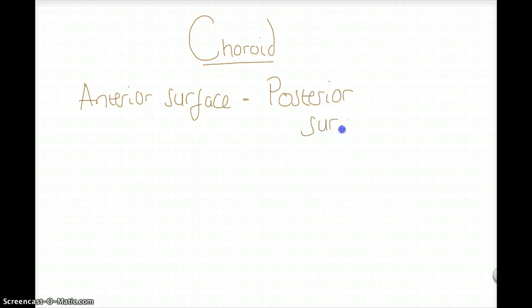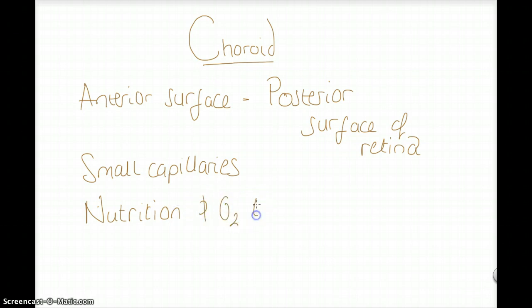The last part of this video will focus quickly on the choroid, again part of the uveal tract. Its anterior surface is in contact with the posterior surface of the retina. The choroid contains small capillaries, so it is a vascular structure. It gives nutrition and oxygen to the posterior surface of the retina.